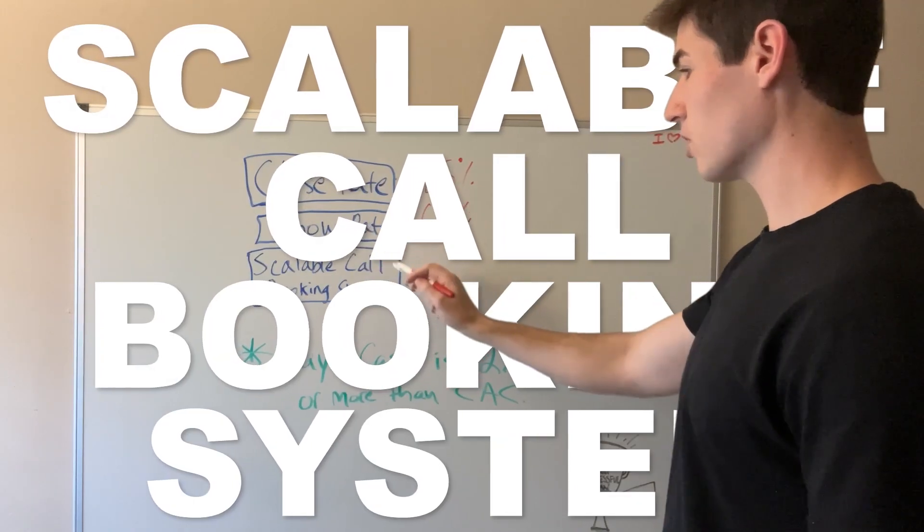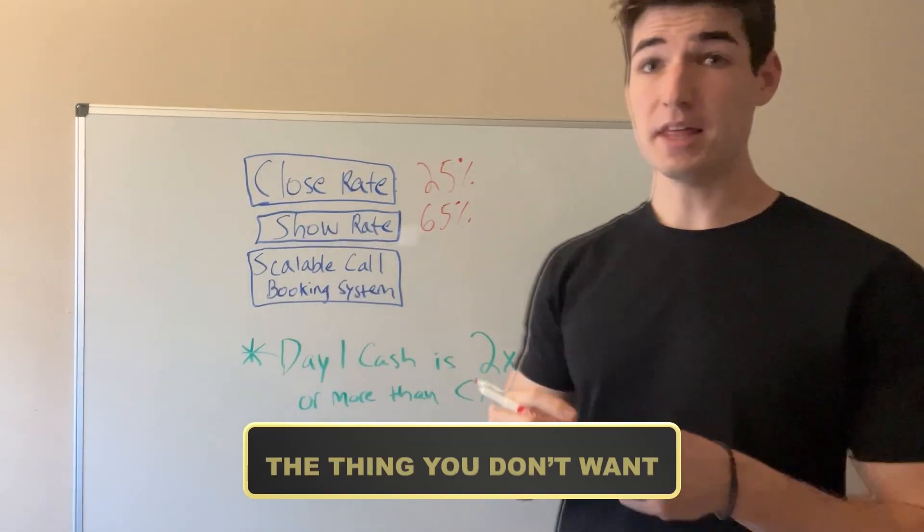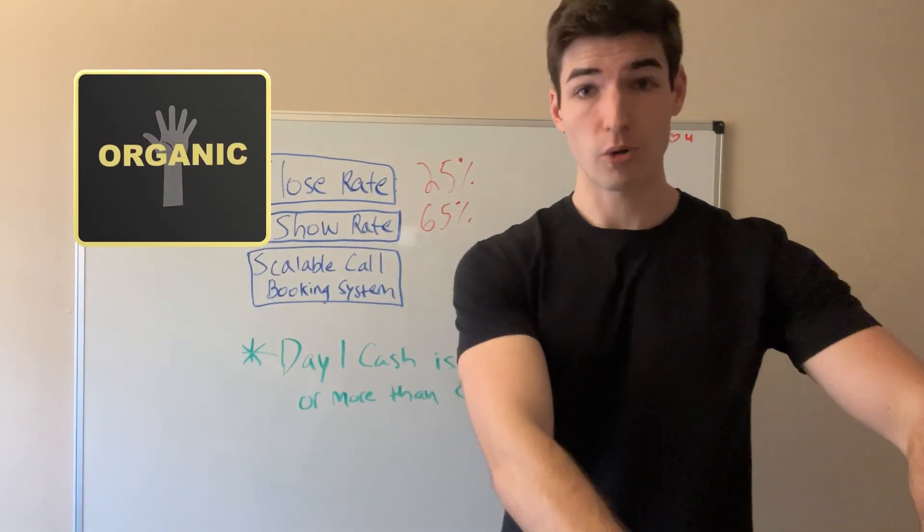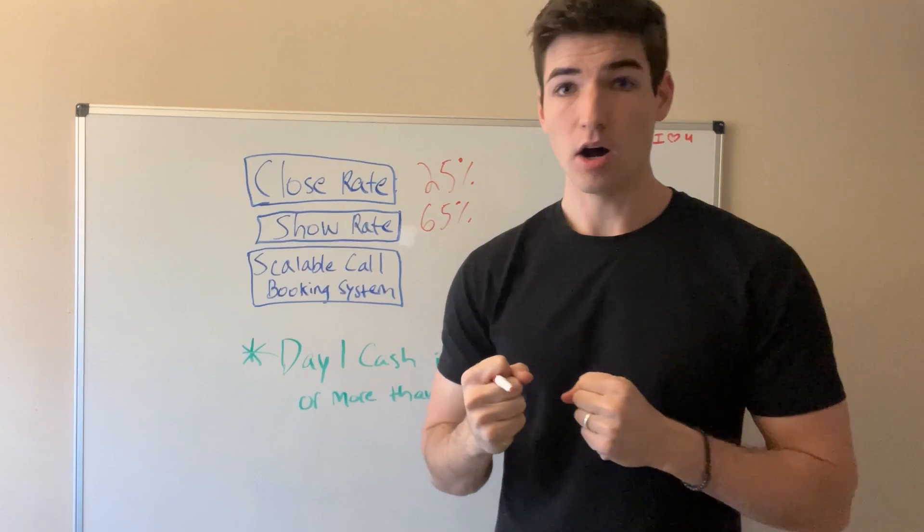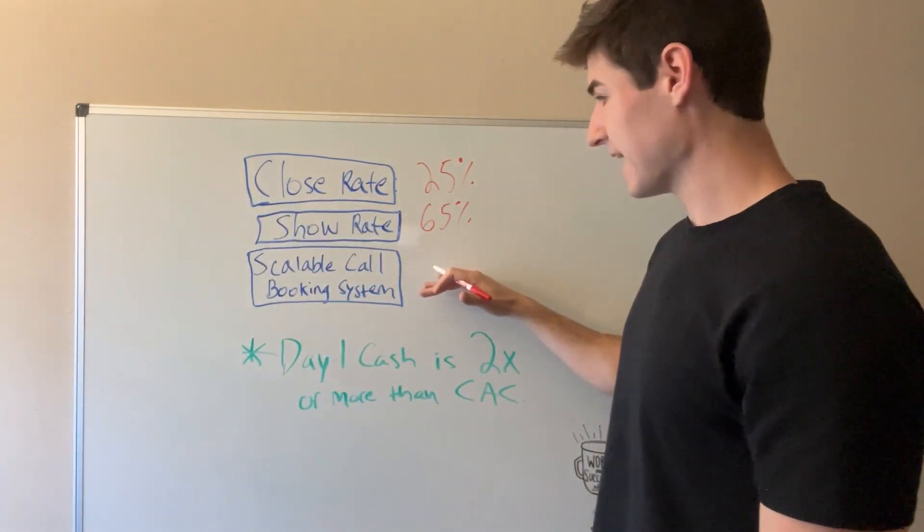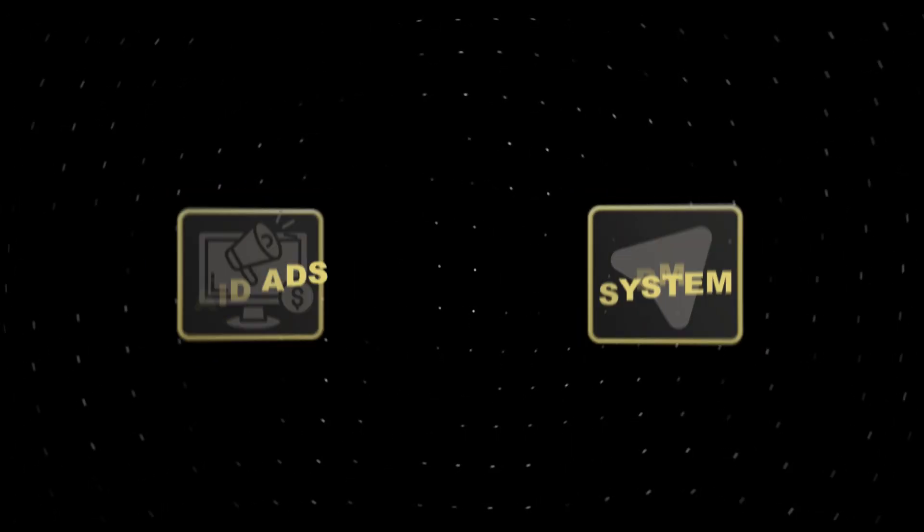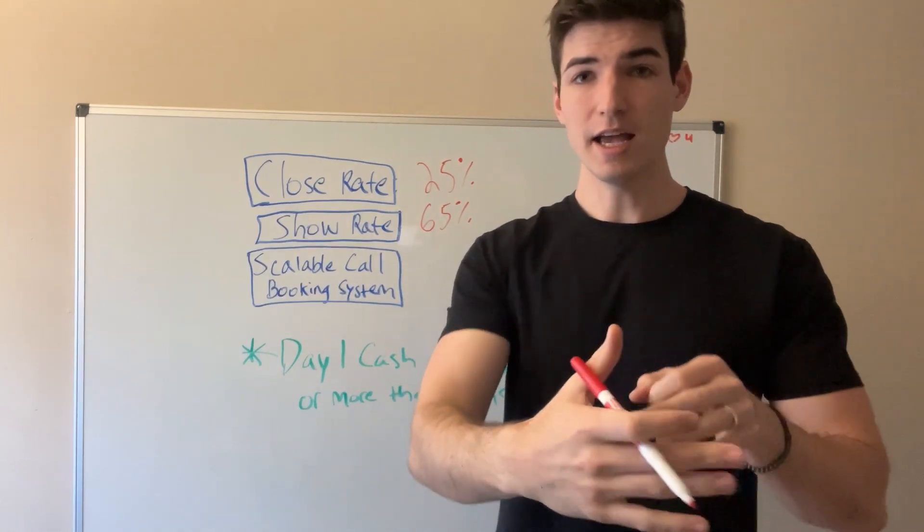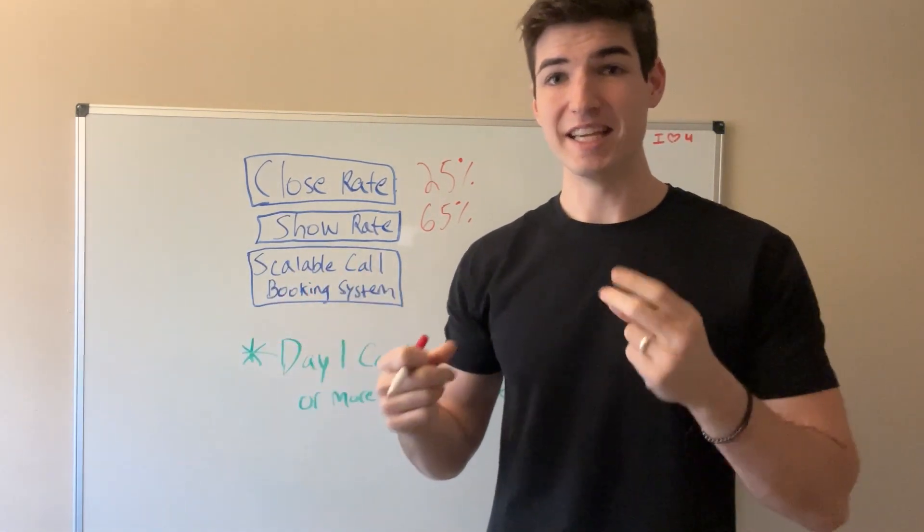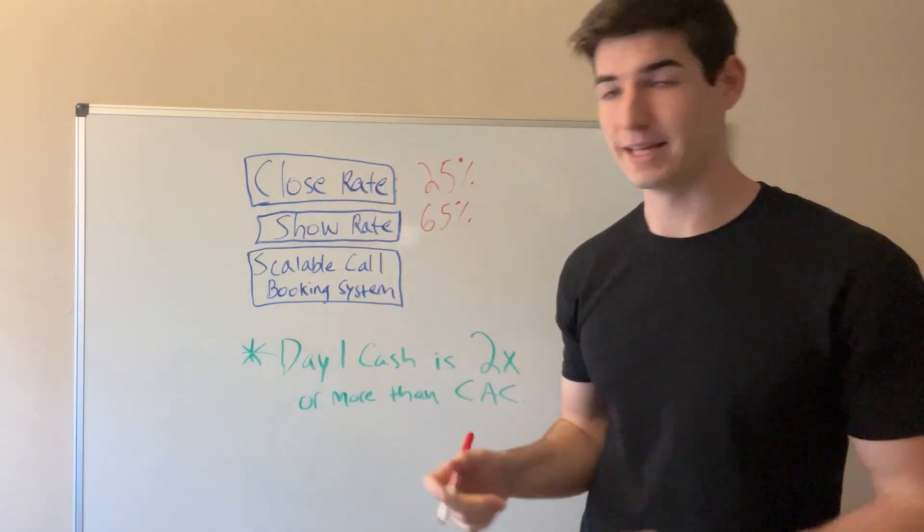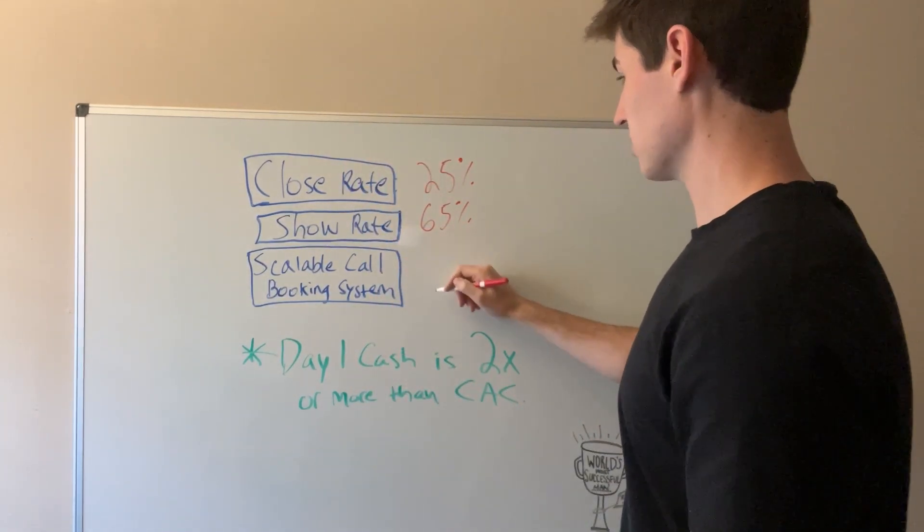The last one is a scalable call booking system. The thing you don't want is a system that's super organic, like you just have an organic audience and you're pitching to them and generating leads that way. You want it to be scalable somehow. So it's usually through paid ads or through some form of DM system where you do more inputs and you get more output. You want it very easy, just like, I can press this one button to do more volume.